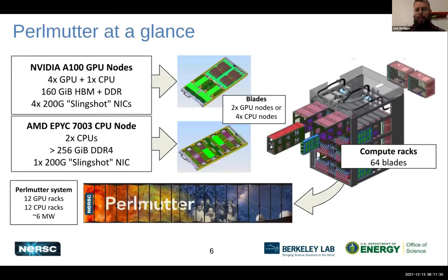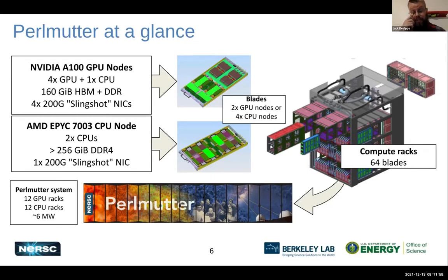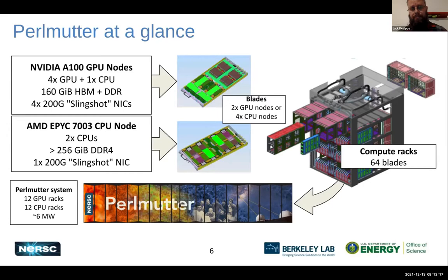Looking at how Perlmutter looks, each blade is powered by four NVIDIA A100 Ampere generation GPUs and one CPU. This is the phase one system with 40 gigabytes of HBM per GPU, so 160 total across each node. The vast majority of performance on a node is coming from the GPUs, so focusing on those GPUs is really important.